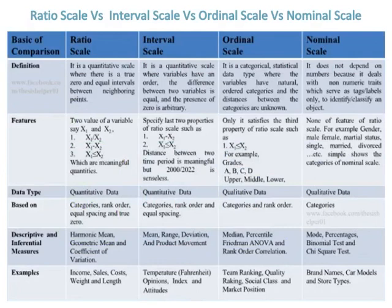The definition of ratio scale is that it is a quantitative scale where there is a true zero and equal intervals between neighboring points, while the definition of interval scale is that it is a quantitative scale where variables have an order, the differences between two variables are equal, and the presence of zero is arbitrary.